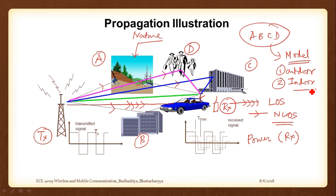Most of the models you will come across are empirical models, not analytical models. That means we have gone on experimenting, gotten some results, and extrapolated equations from that data. We will go on measuring data, fitting it to equations, and claim how much the channel is effective between a transmitter and receiver. Since the randomness of the channel is so much, we cannot really predict it, but we have to take the non-line-of-sight nature into account. Starting from this module everything till GSM will be based on channel modelling itself.